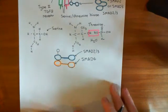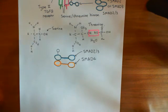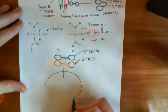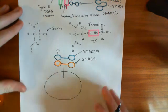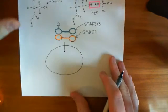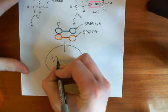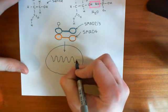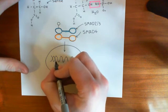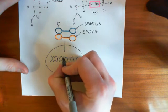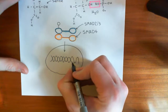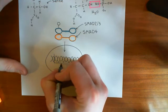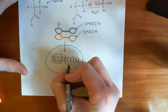This complex of the R-SMAD with SMAD4 is now going to act as a transcription factor, so it's going to go into the nucleus of the cell. It's going to interact with the DNA in the nucleus. Basically, in front of all genes — upstream of every gene in the human genome — there is what is known as a promoter region. The promoter region is a non-coding portion of DNA, i.e., it's not involved in the transcription and translation process for making the protein. Instead, what it is involved in is controlling the expression of the gene.